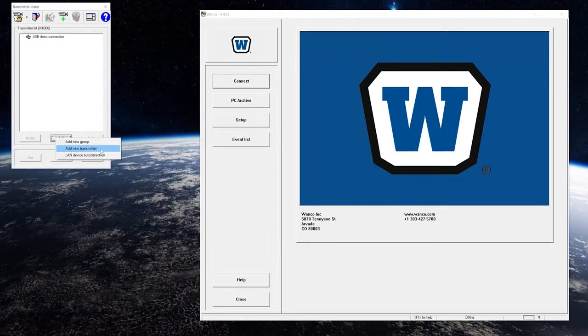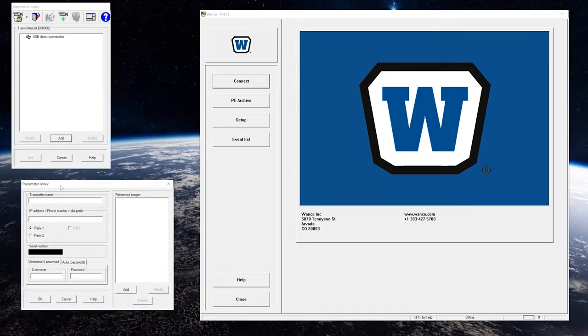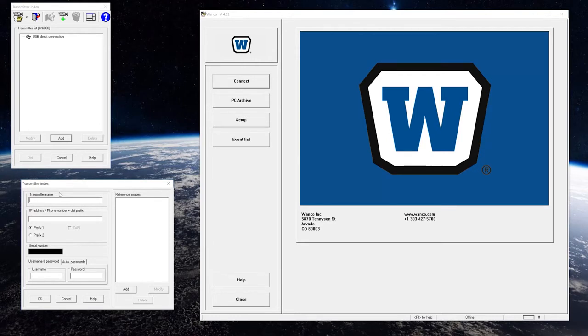Now the index is asking us for the transmitter name or which would be the trailer name. For this video we're just going to call it Wanco Video Unit. Okay, we're going to put our IP number in that is from the 4G IP address on the paper.